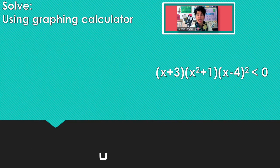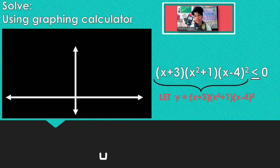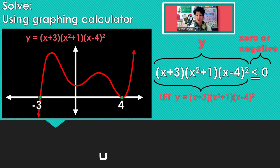Last one — less than or equal to 0. I go through and graph it. Less than or equal to means 0 or negative.